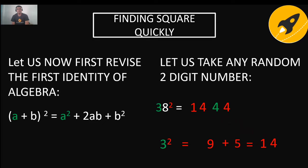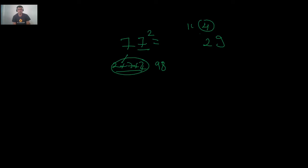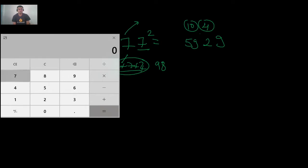Let us check with another number: 77². Step 1: 7² = 49; write 9, carry 4. Step 2: 2 × 7 × 7 = 98; add 4 to get 102; write 2, carry 10. Step 3: 7² = 49; add 10 to get 59. Result: 5929. We can verify: 77 × 77 = 5929. Correct!